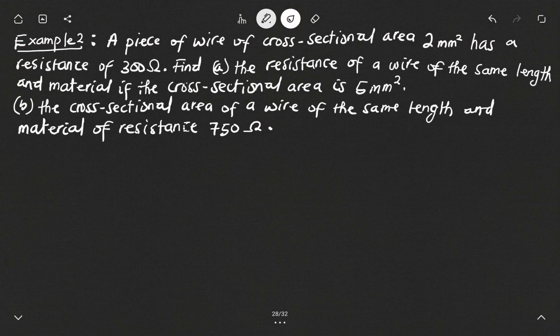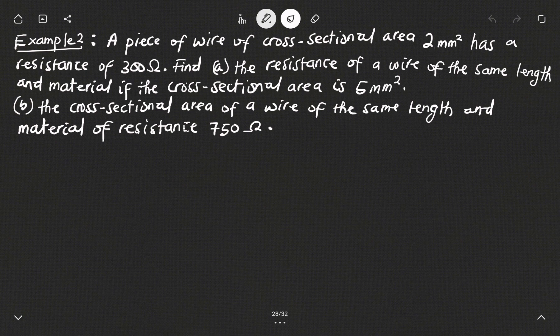Let's look at the second example. A piece of wire of cross-sectional area 2 millimeters squared has a resistance of 300 ohms. We are to find A, the resistance of a wire of the same length and material if the cross-sectional area is 5 millimeters squared, and B, the cross-sectional area of a wire of the same length and material with resistance 750 ohms.